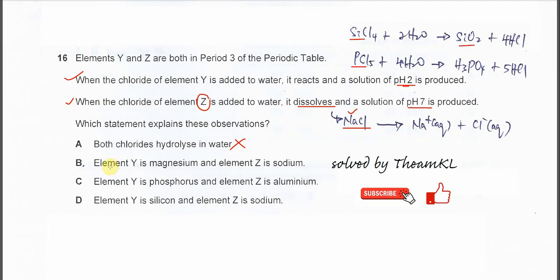For B, element Y is magnesium and element Z is sodium. Element Z is sodium, so element Y cannot be magnesium. It must be either silicon or phosphorus.